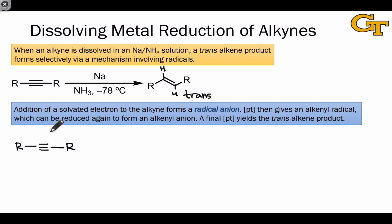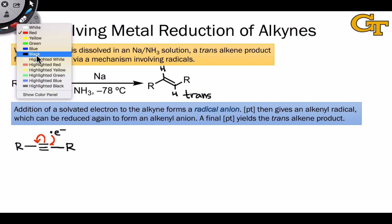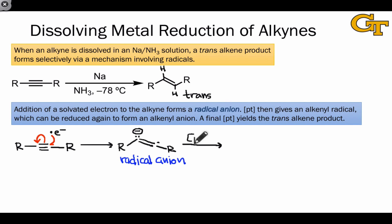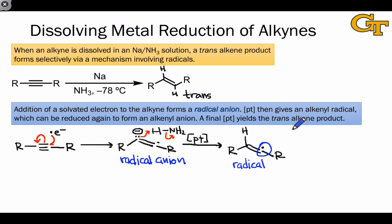Let's look at the mechanism in detail. To represent the solvated electron, I'm simply going to use a dot, since the active part of that species is the electron itself. Radical addition of the electron to the alkyne gives rise to a radical anion intermediate — combining one-electron and two-electron arrows here. The intermediate contains an anionic carbon and a radical carbon at the location where the electron was donated. The next step is a familiar two-electron event: proton transfer. This anion is extremely basic and can grab a proton from NH₃ to form a neutral alkenyl radical. At this point we don't yet have a stereochemical issue, as the alkenyl radical is linear.